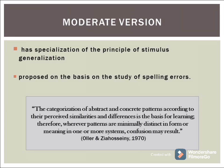Ziosceni 2006 believes that for learners of English as a second language, English spelling proved to be more difficult for people whose native language used a Roman script — for example, French or Spanish — than for those whose native language used a non-Roman script, such as Arabic or Japanese. According to Oller and Ziosceni 1970, the categorization of abstract and concrete patterns according to their perceived similarities and differences is the basis for learning. Therefore, wherever patterns are minimally distinct in form or meaning in one or more systems, confusion may result. In contrast, if patterns are functionally equivalent in a system, correct generalization may occur. This suggests that the most difficult part is learning the sounds, sequences, and meanings where the most subtle distinctions are required, either between the target and native language, or within the target language.